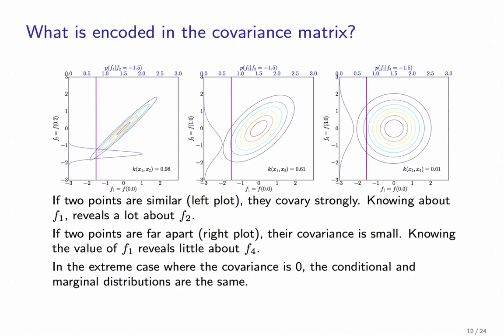Note that there is a tiny error here. We are actually conditioning on f1 equals negative 1.5 in all three cases. This concludes the basics about Gaussian processes. In the next video, we will talk about how to actually use them for regression.